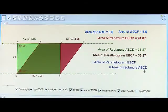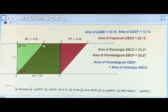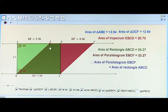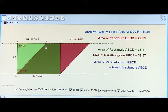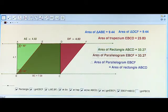Now let us explore further. Change the shape of the parallelogram by dragging the vertex E. The areas of the individual triangles and the trapezium are changing, but every time the area of the parallelogram remains the same as the area of rectangle ABCD. So the area of the parallelogram is not changing at all.